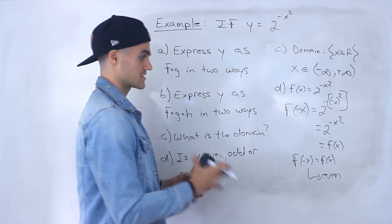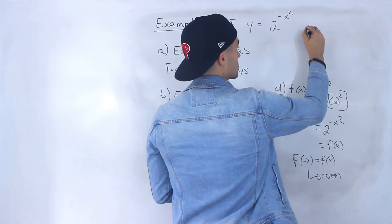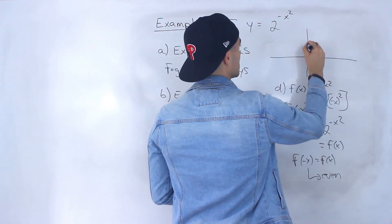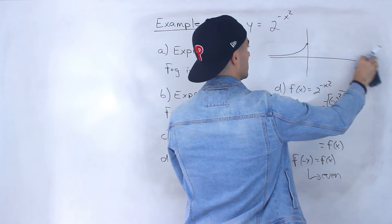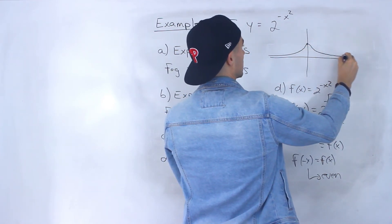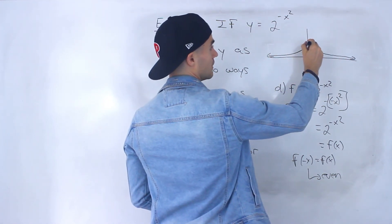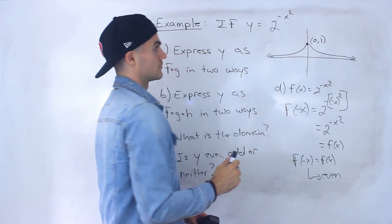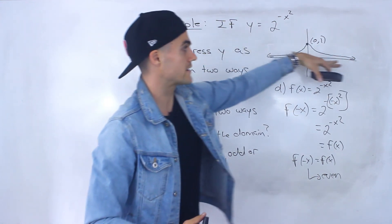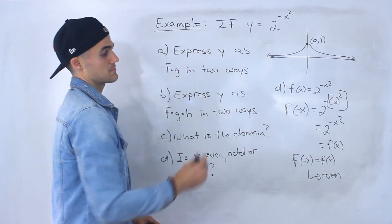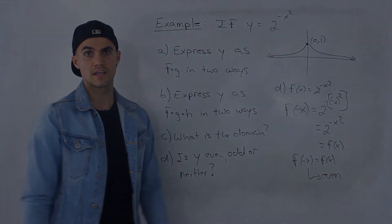And graphically, that means it is symmetrical about the y-axis. An even function is symmetrical about the y-axis. If you plug this into Desmos, it would look something like that — symmetrical about the y-axis. This point here would be 0 and 1. All of the y values besides this one would be less than 1, and there would be a horizontal asymptote on both sides at y equals 0. So notice that's a symmetric function. So this here is an even function.